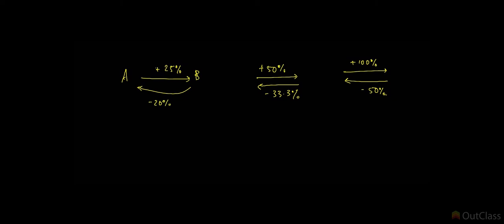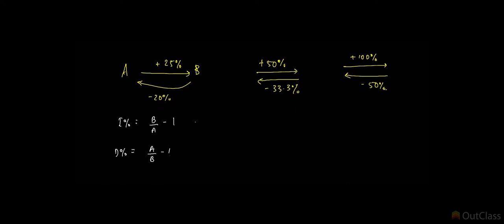I also mentioned that the increase percent can be calculated as final value by initial value minus 1. And what about the decrease? It is final value by initial value minus 1. It's because of these minus ones that you do not immediately see the relation between the 25 and the minus 20. But now that we have written these equations here, if I ask you to write a formula that relates I percent and D percent, it becomes somewhat evident that you just have to take the b by a and the a by b and multiply them together to get one.